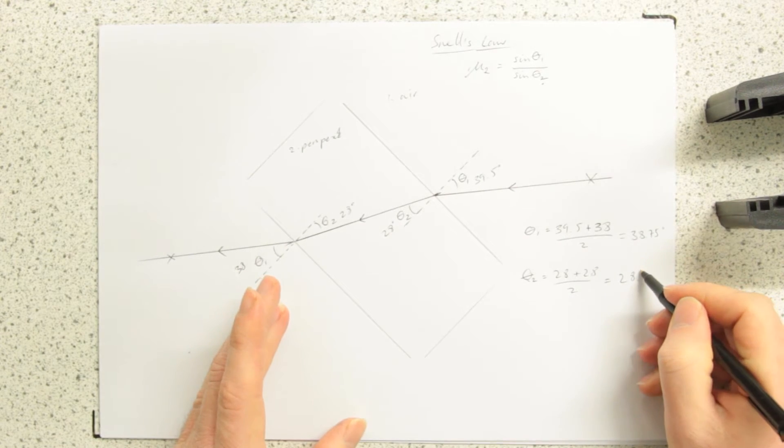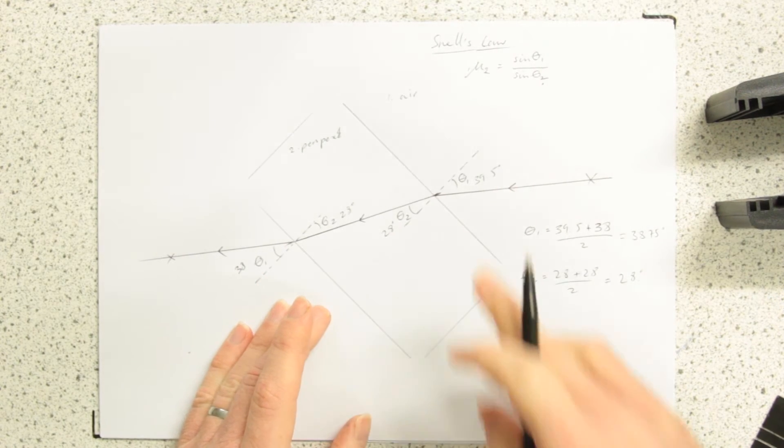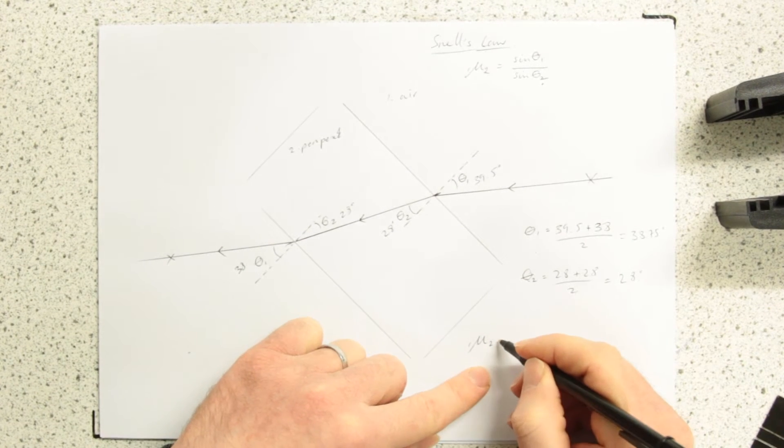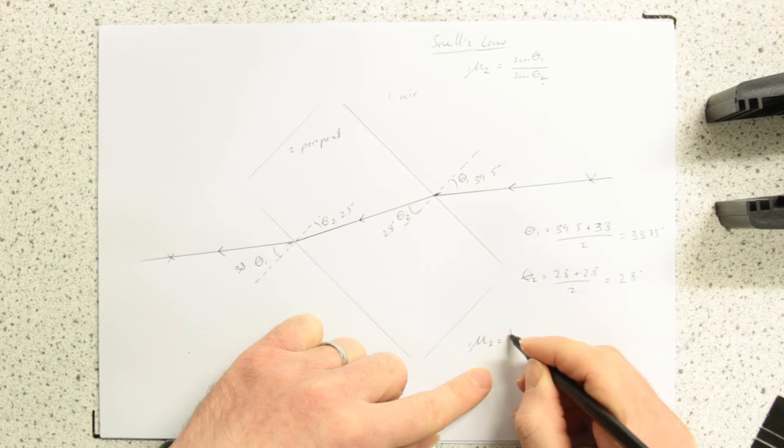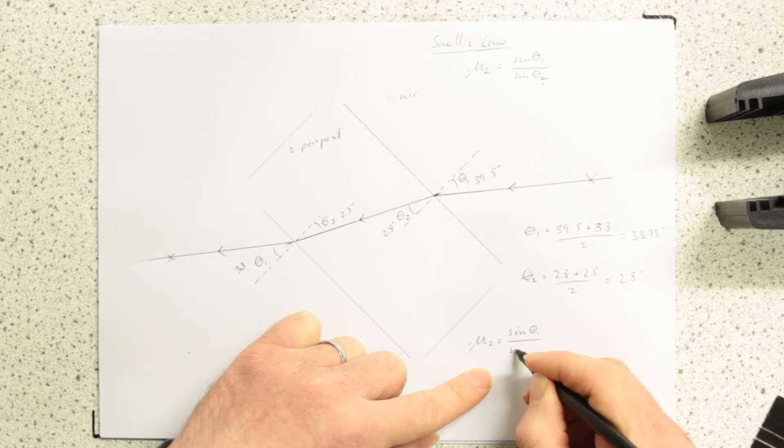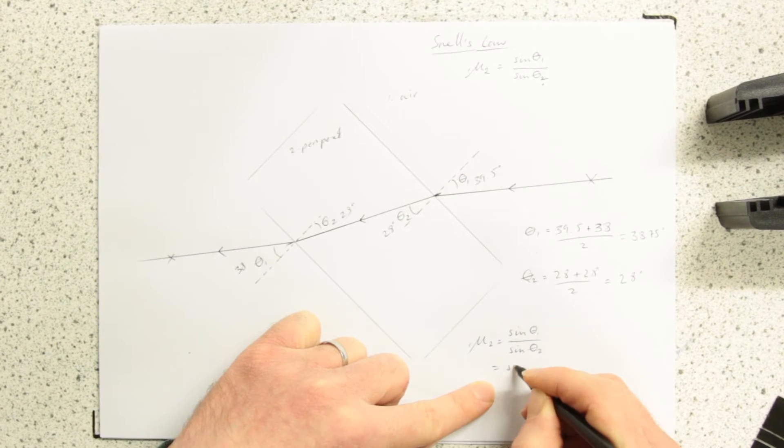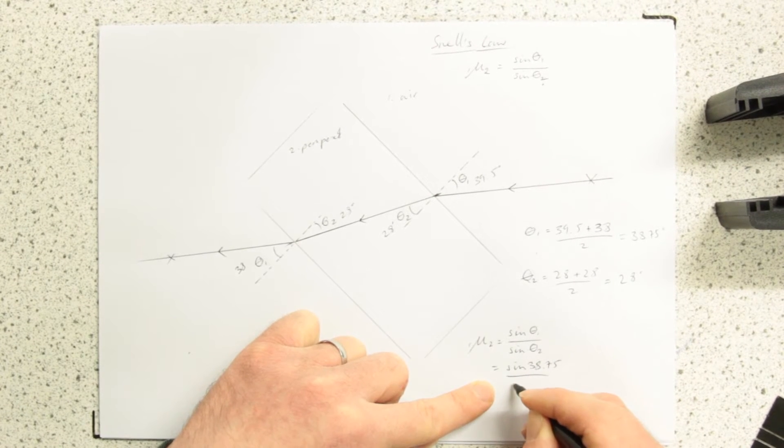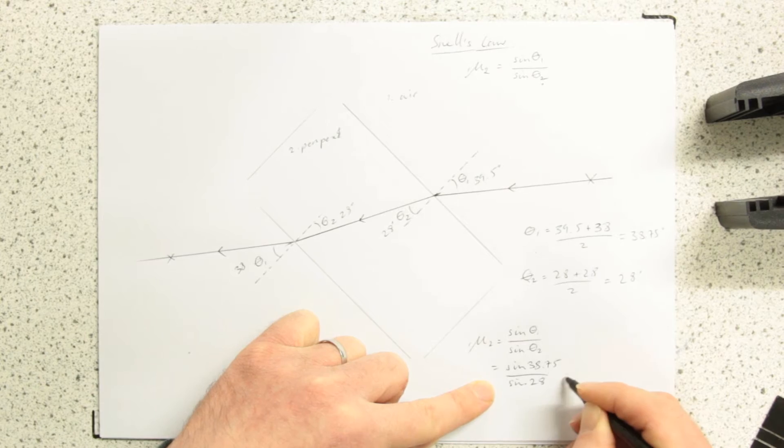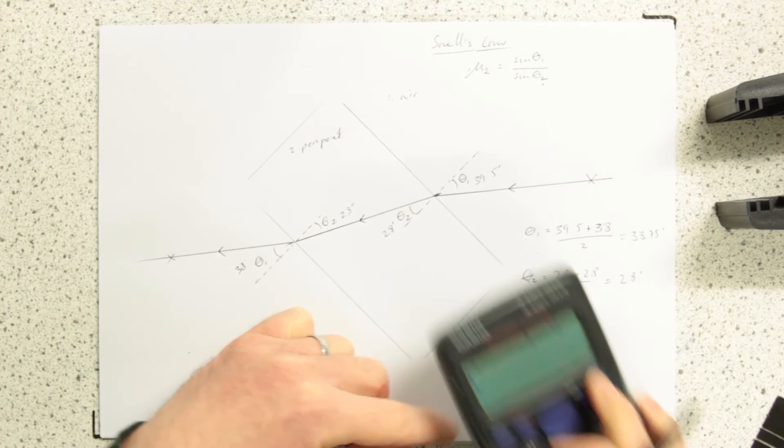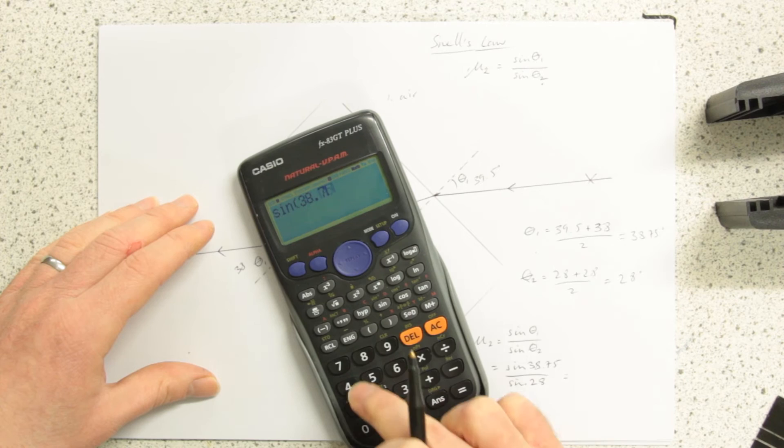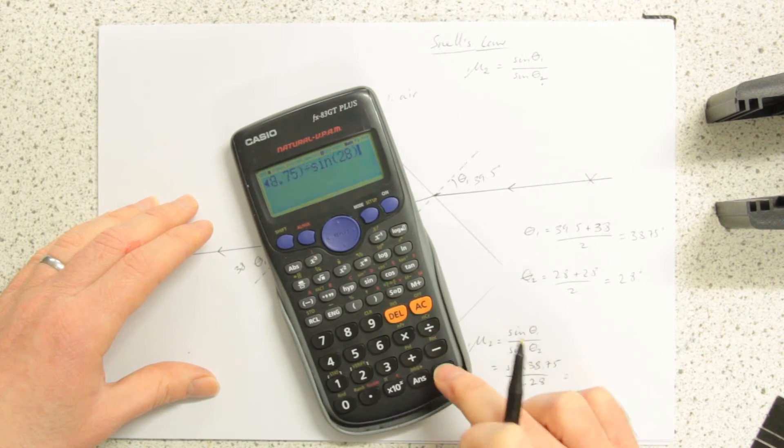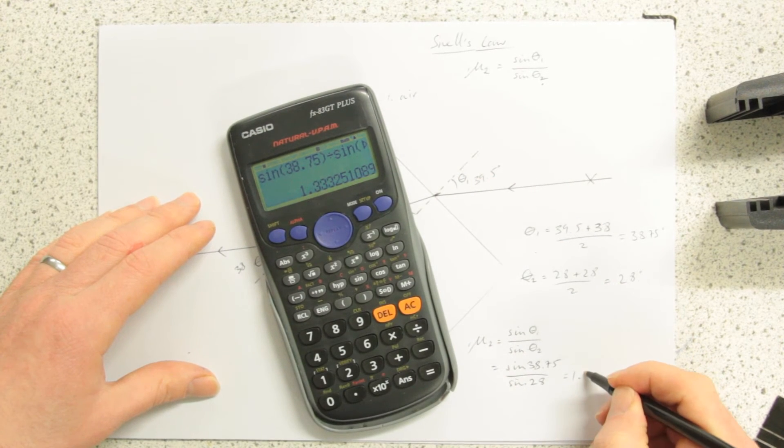Okay. So, my refractive index is going to be sine, that letter by the way is mu, a Greek letter, and this one is theta, which is sine of 38.75 over sine 28. 1.33.